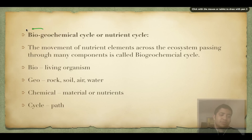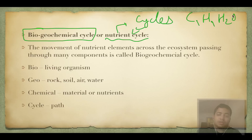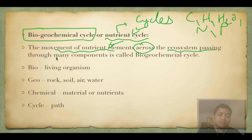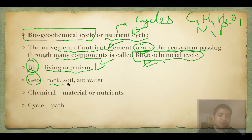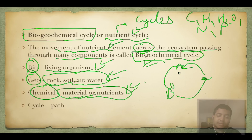Now we come to the video's actual part - the biogeochemical cycle. It is also called the nutrient cycle because it cycles various nutrients like carbon, hydrogen, water, nitrogen, and phosphorus. It refers to the movement of nutrient elements across the ecosystem passing through many components. Bio means living organism, geo means rock, soil, air or water, and chemical means material or nutrients. It is cyclical - A leads to B, B leads to C, and C leads back to A.